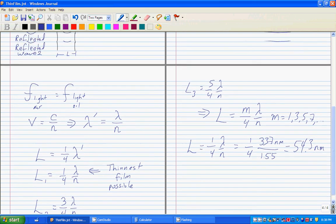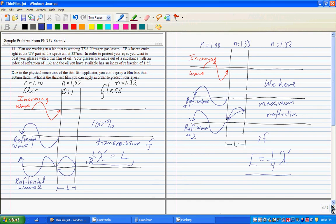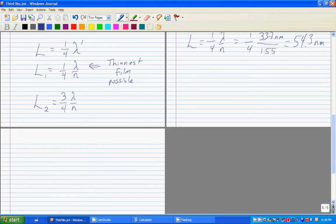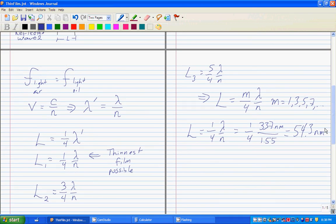Now it turns out that the engineering constraint of the problem is that we can't apply any film less than 30 nanometers thick. If we try m equal to three and five, it's still too thin.